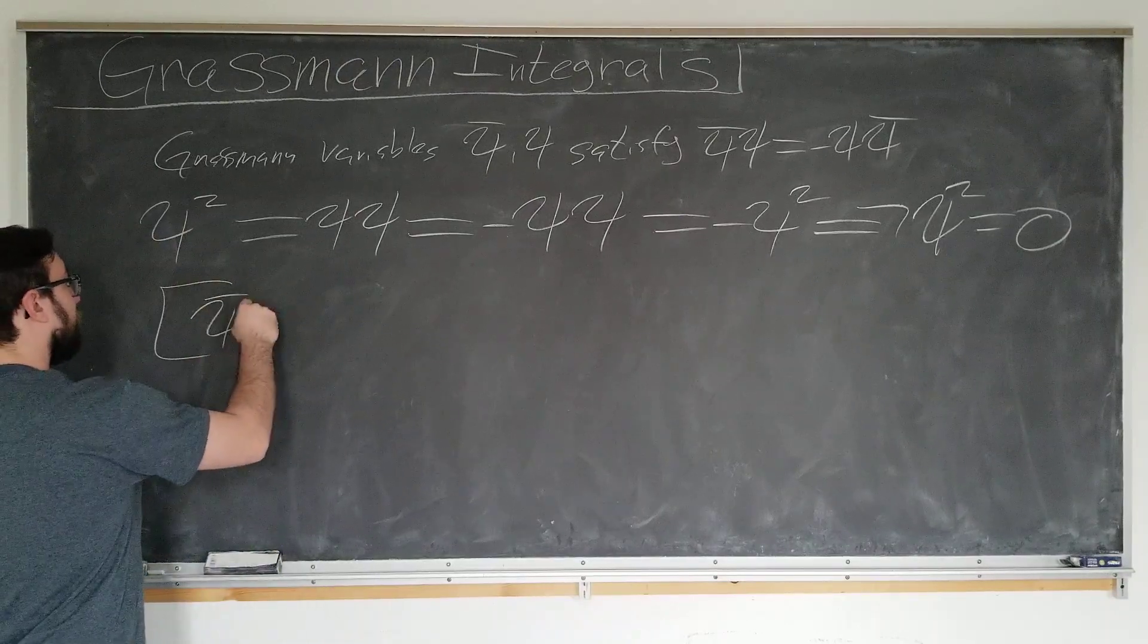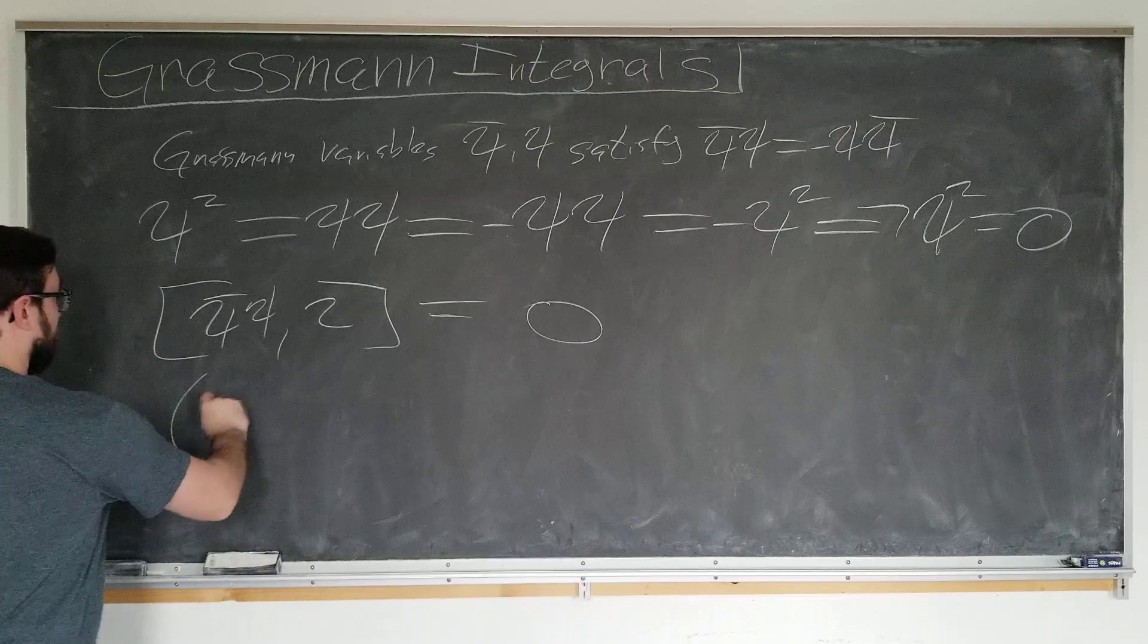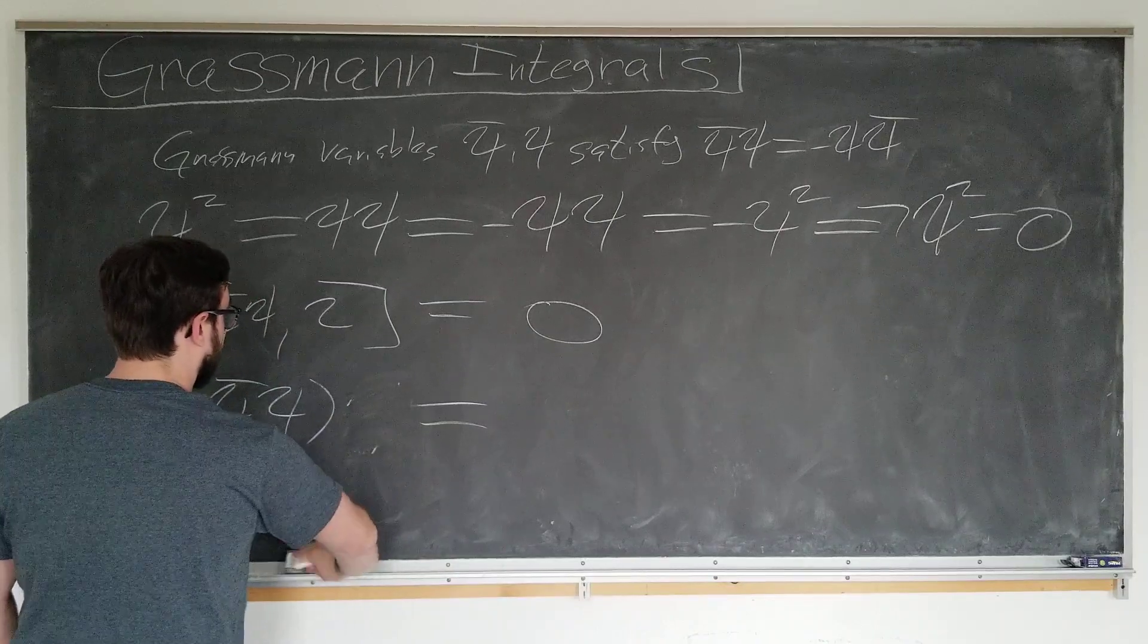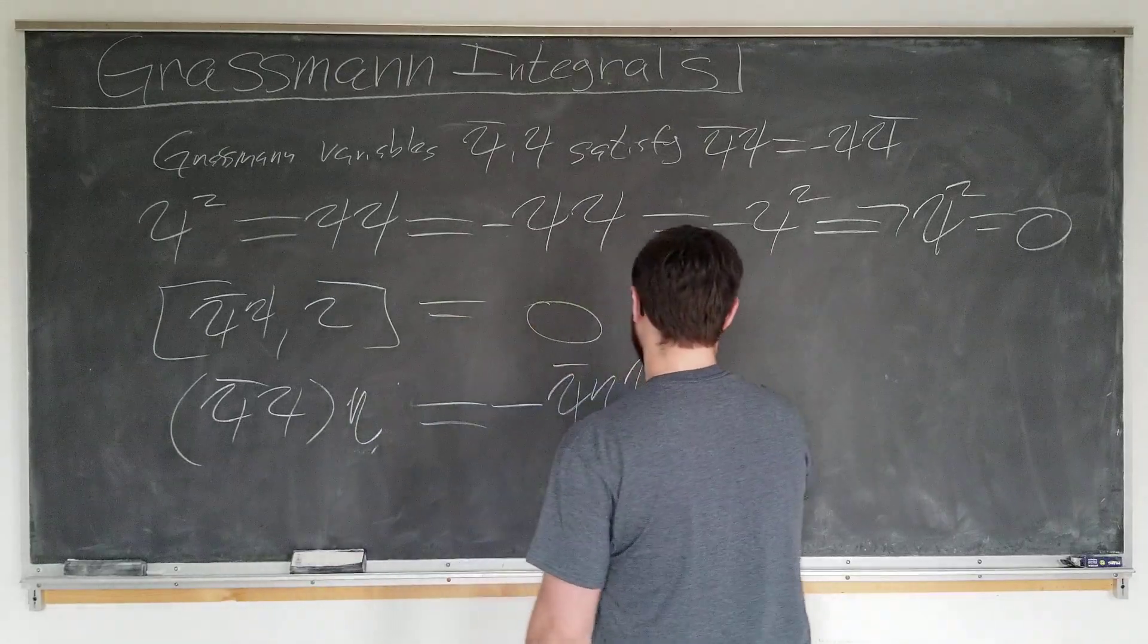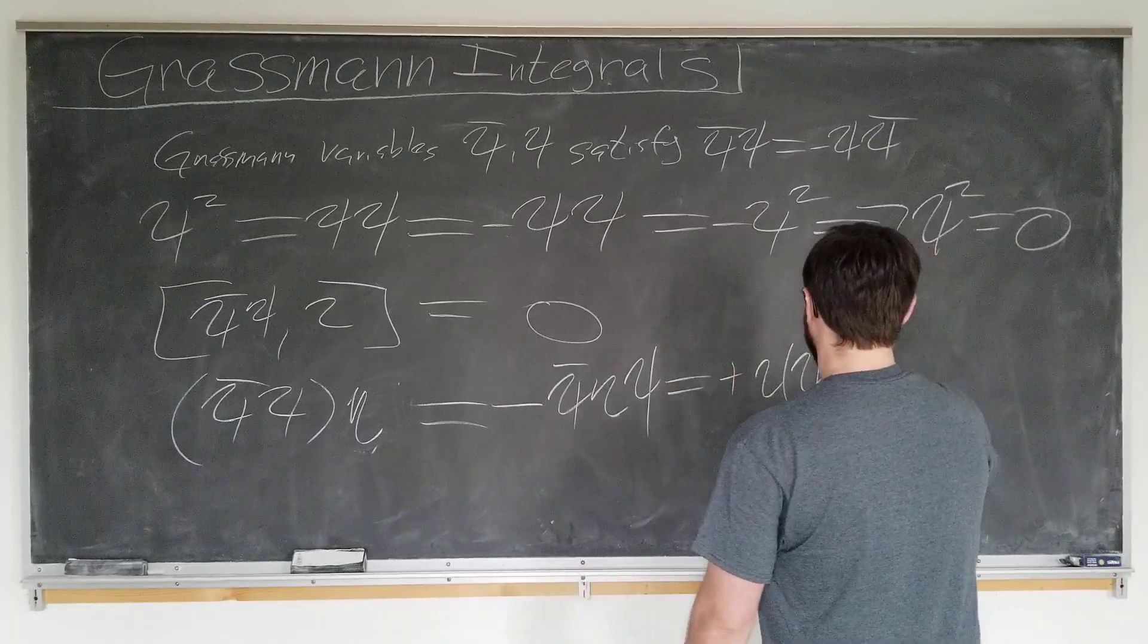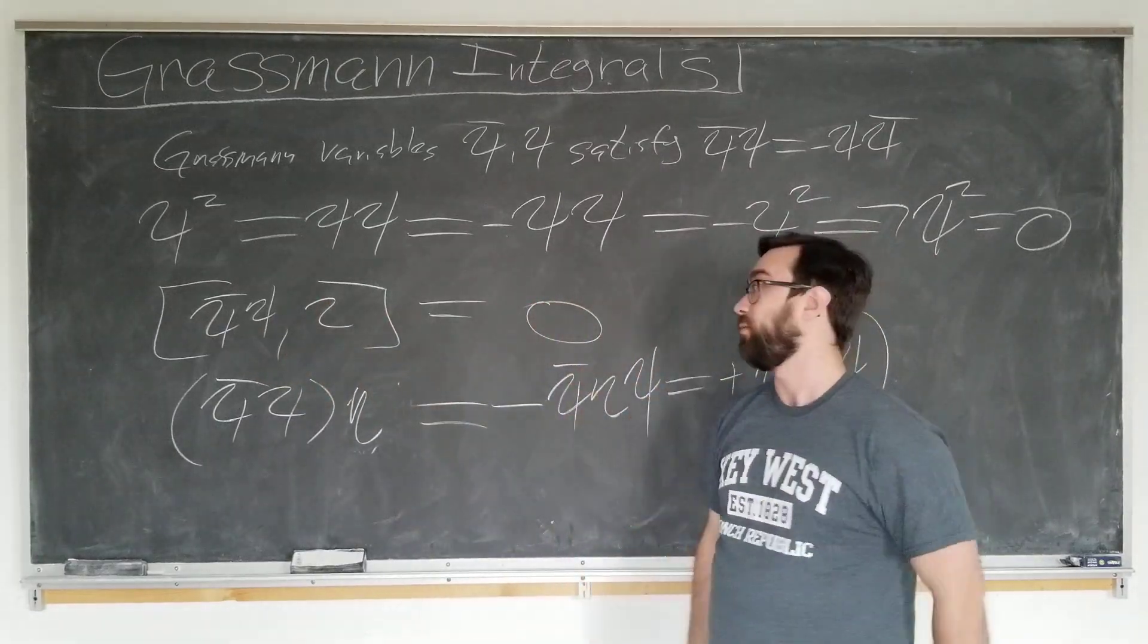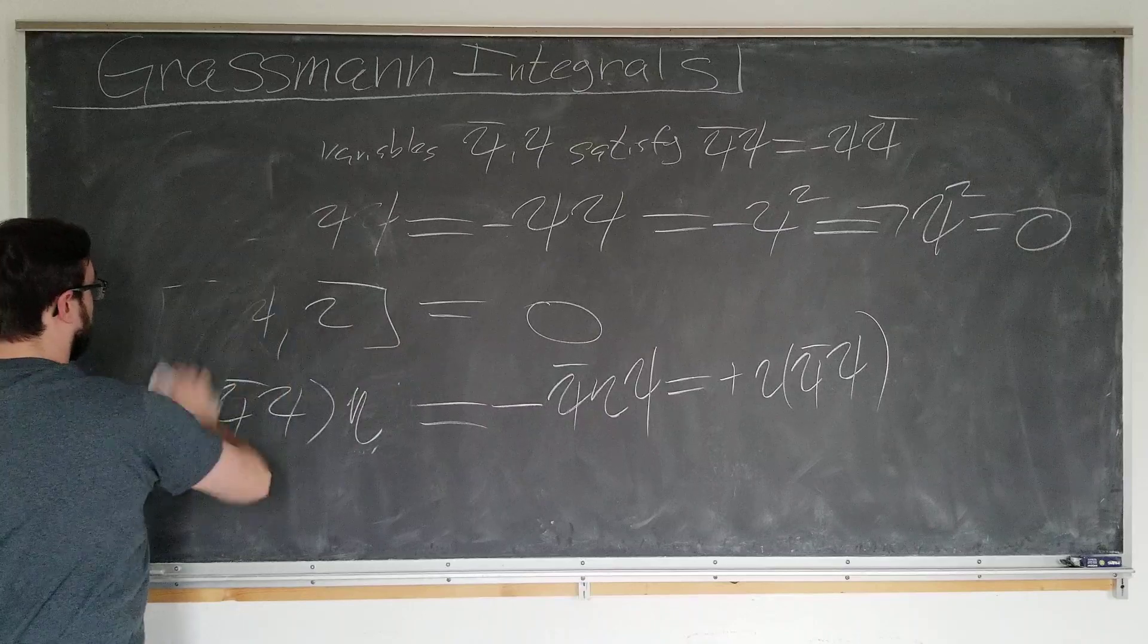We can also derive an elementary property that any product of two Grassmann variables commutes with a third Grassmann variable, since psi bar psi acting on eta is just, on anti-commuting, minus psi bar eta psi, which is positive eta psi bar psi. So anytime we see an expression with two psis together, we can always commute it with a third Grassmann variable for no cost. We don't get the minus sign if we have two stuck together.